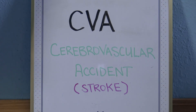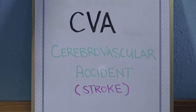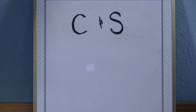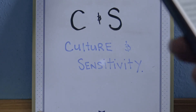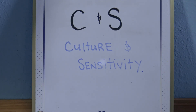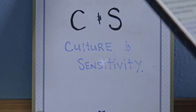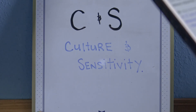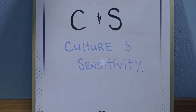C&S — C&S stands for culture and sensitivity. That is a lab test performed to detect infection. They want to isolate what the infection is so that they can pair it with the correct antibiotic. So it's a very specific lab — C&S, culture and sensitivity.